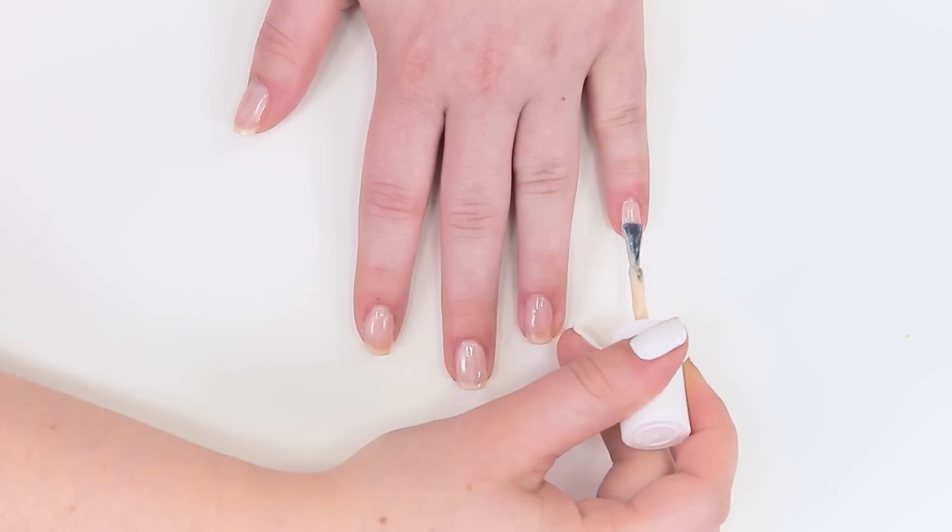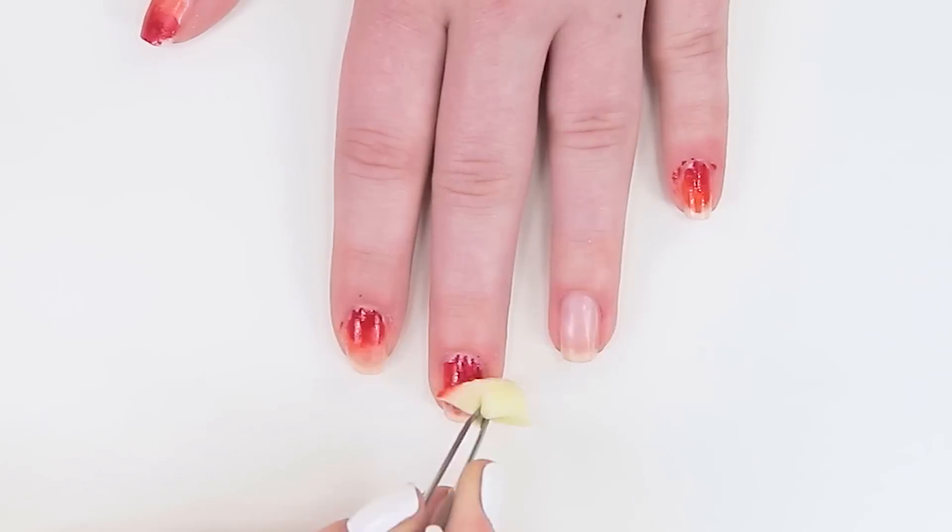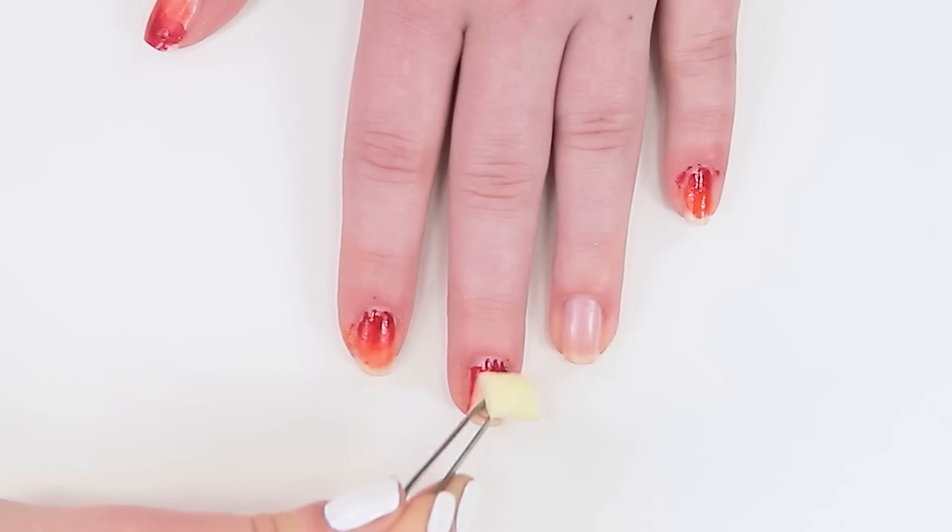Start off with your favorite base coat. Tear a makeup sponge into small pieces. Use shades of red, orange, and yellow to create an ombre effect, and make sure to sponge the colors on top of each other to blend.